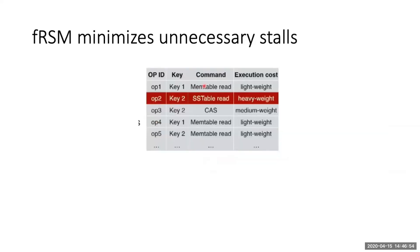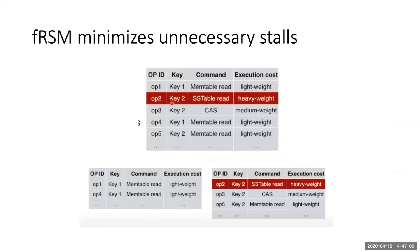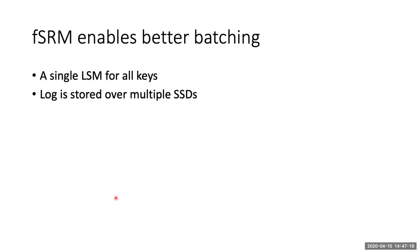Because each key has a separate log, one operation doesn't have to block all subsequent operations. In the coarse-grained approach, operation two blocks all following operations. In the fine-grained approach, operation two only blocks operations on the same key — other keys like operation four can proceed independently. Also, having one log for all keys means larger batch sizes when writing to disk, allowing more efficient use of disk bandwidth.